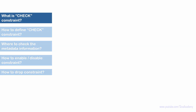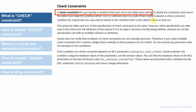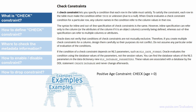Here is a snippet from Oracle documentation which talks about what is a check constraint. A check constraint lets you specify a condition that each row in a table must satisfy. Basically, using a check constraint we can enforce row-level or value-level rules, meaning we can ensure that only valid values get inserted into the table.